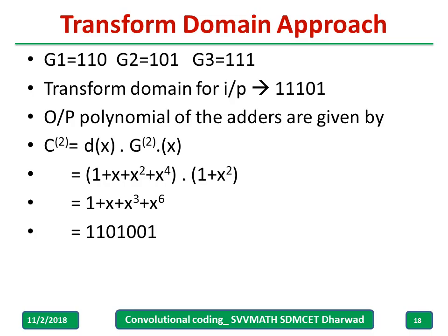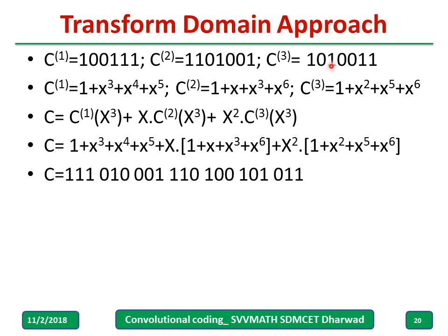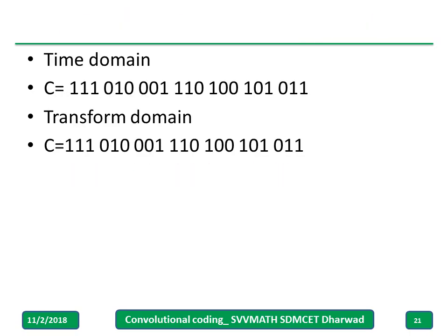For c of 2 the only change is using g2, and similarly for c3 use g3. The total codeword c of x now uses x cubed since there are 3 generators. This is the general format: fill in the values, find the polynomial, replace with zeros and ones. Both time domain and transform domain yield the same codeword.